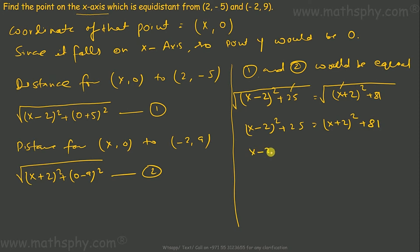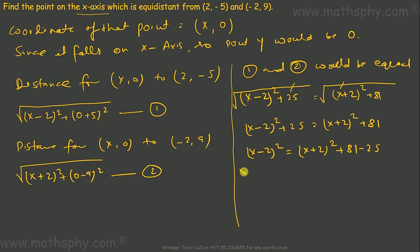So (x minus 2) whole square equals (x plus 2) whole square plus 81 minus 25. Opening the brackets: (a minus b) whole square gives a squared plus b squared minus 2ab, so we get minus 4x; and (a plus b) whole square gives a squared plus b squared plus 2ab. And 81 minus 25 gives 56.